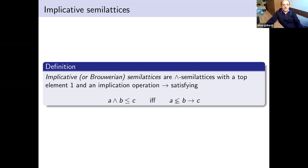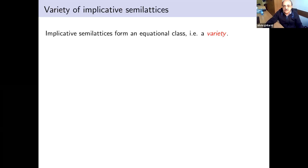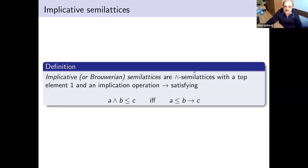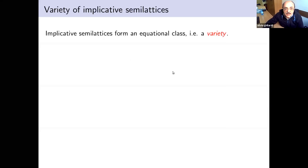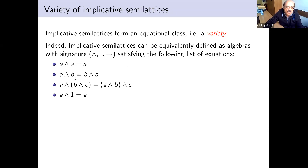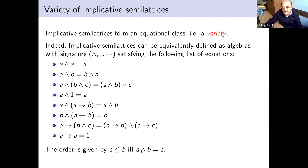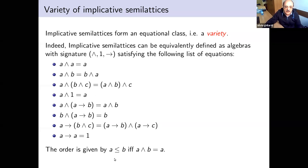There is an equational axiomatization which is quite standard. The implicative semilattices form a variety, and here you have the equations: commutativity, associativity, unit element, and the condition corresponding to adjointness — the fact that the implication is a right adjoint to conjunction.